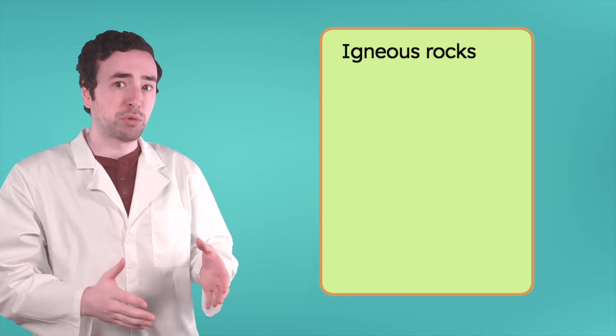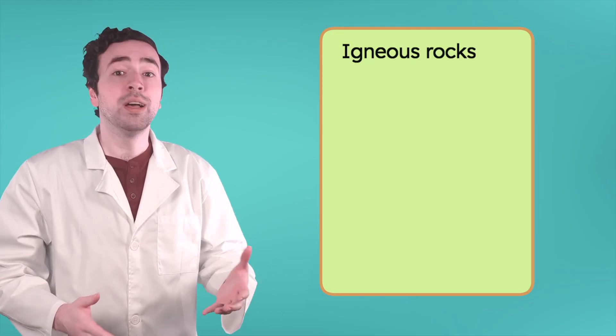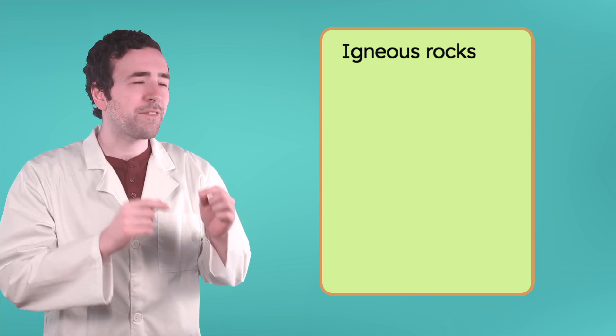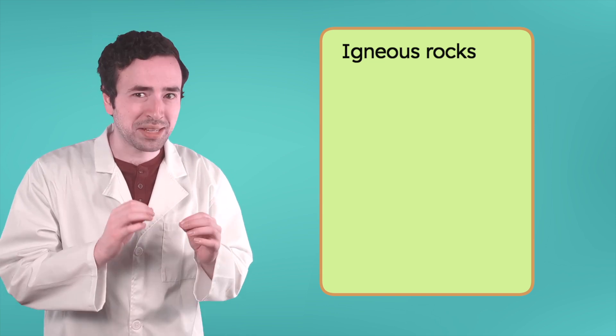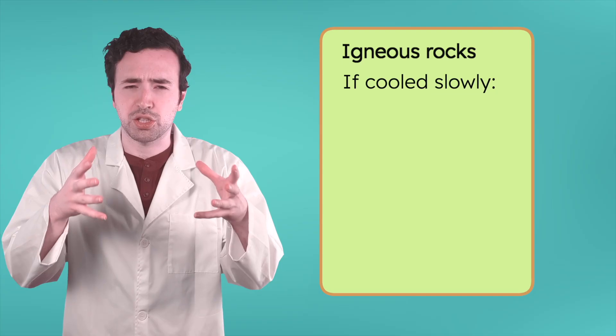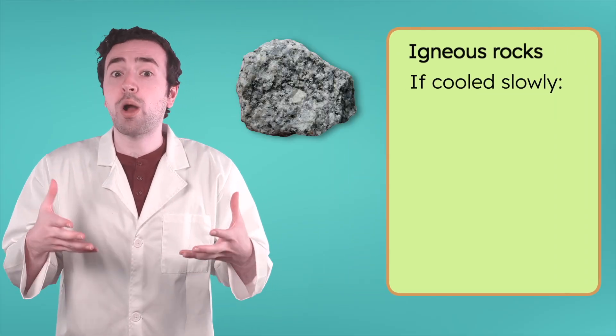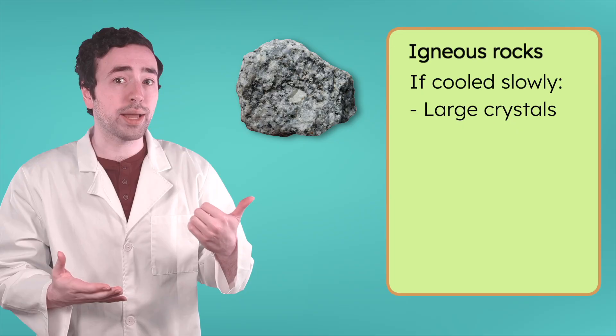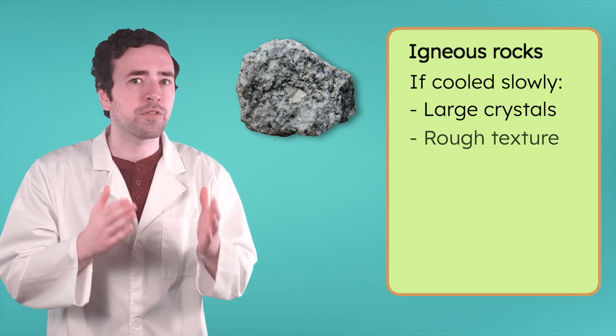A rock's properties often come from how it was formed. So by observing them, we can sometimes figure out if the rock is igneous, sedimentary, or metamorphic. Igneous rocks are made from molten rock — magma or lava — that cools and hardens. The way the rock cools affects its texture and grain size. If the cooling happens slowly underground, the rock might have large, visible crystals, like granite, which gives the rock a rough texture.